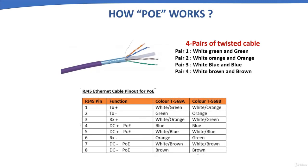Ethernet cable that meets the CAT standard consists of four twisted pairs. PoE sends power over these pairs to PoE-enabled devices. The first PoE standard used two twisted pairs for data and the remaining two for power transmission. With new PoE standards, both power and data are sent over all four twisted pairs. Power and data transmissions do not interfere because electricity and data operate at opposite ends of the frequency spectrum.